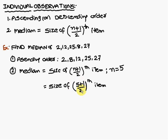Therefore, 5 plus 1 by 2. That is nothing but third item. That is third item is nothing but...